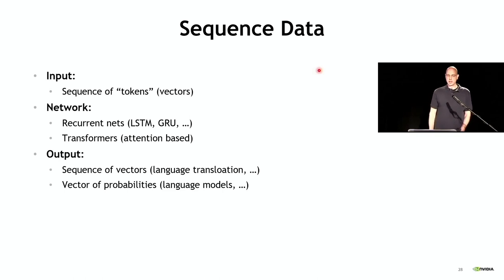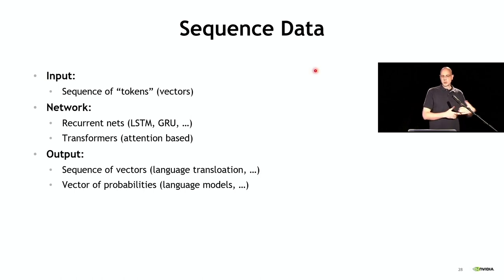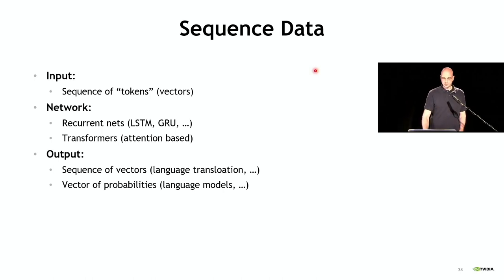Moving on to sequence data: sequence data is a sequence of tokens — words or word pieces for language — each of which gets turned into a vector through embedding layers. Two types of networks: recurrent networks (LSTMs, GRUs) — not covered today due to time constraints — and transformer networks, which are attention-based and very popular. Typical outputs are sequences of vectors for language translation, or a vector of probabilities for predicting the next word or chatbot responses. Embeddings for language are much smaller than for recommenders: always one-hot, one table (maybe two for translation), vocabulary sizes up to about 50,000 rows versus billions for recommenders, but embedding vector sizes are larger — hundreds to thousands of elements.